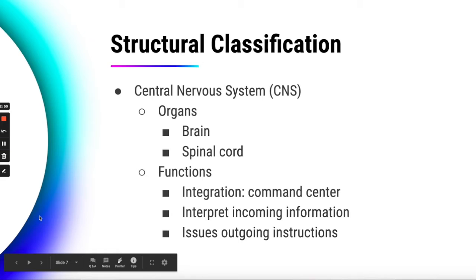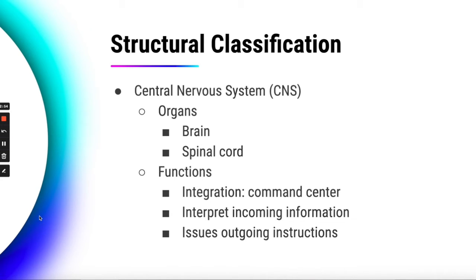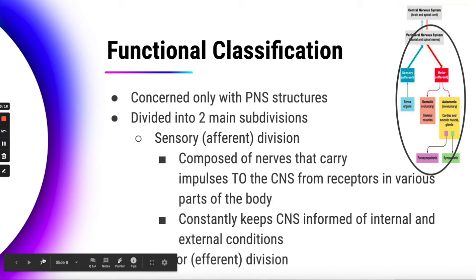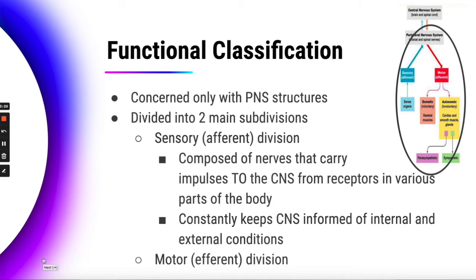The functions would be integration. Your brain essentially acts as a command center — the spinal cord can as well when we're looking at reflexes. It's basically in charge of getting all of the information, interpreting the information coming in, and then issuing some kind of instructions going out to produce some kind of response. The functional classification is really only concerned with peripheral nervous system structures.